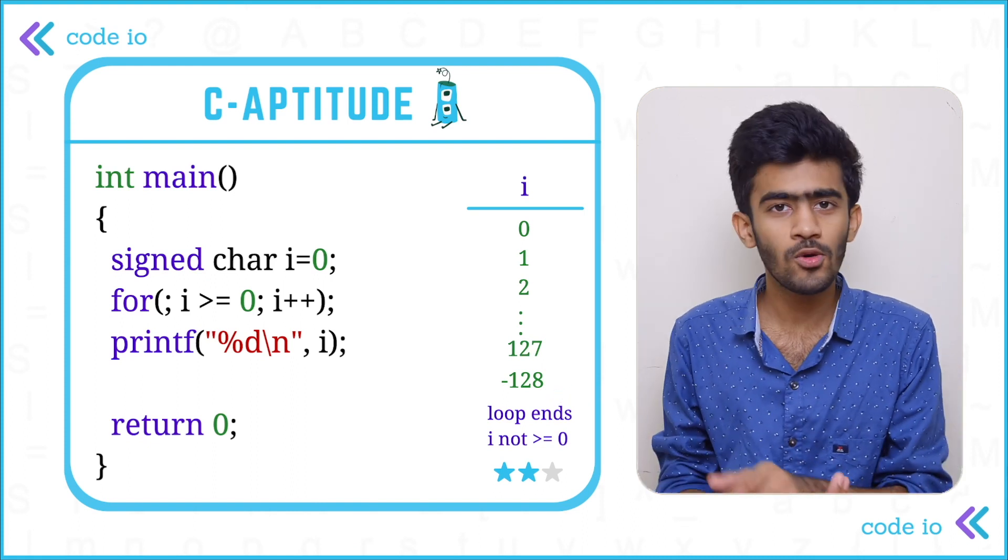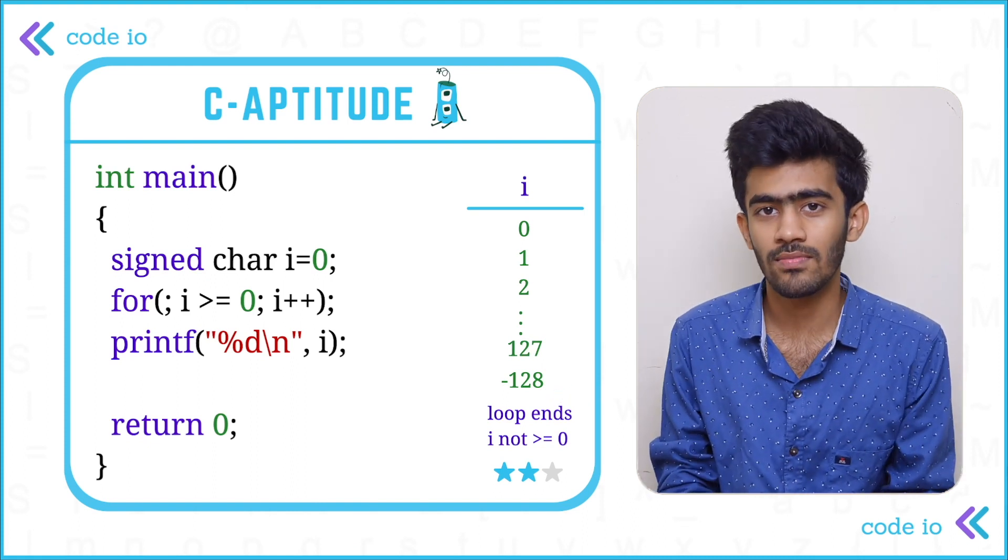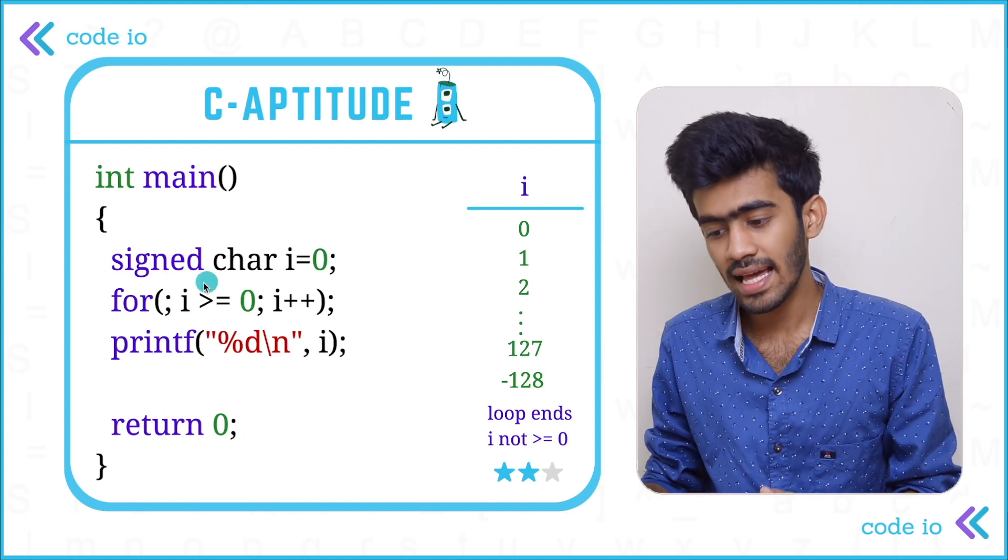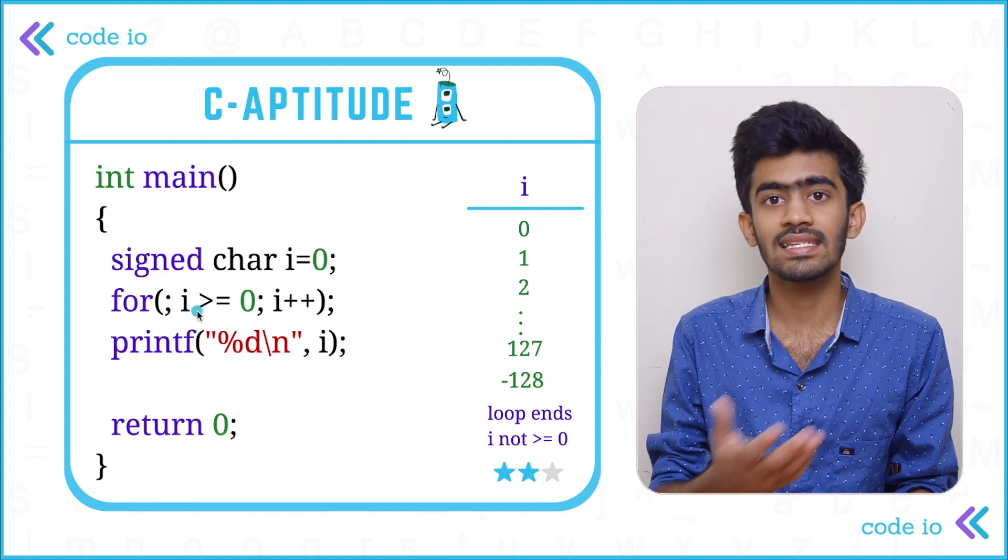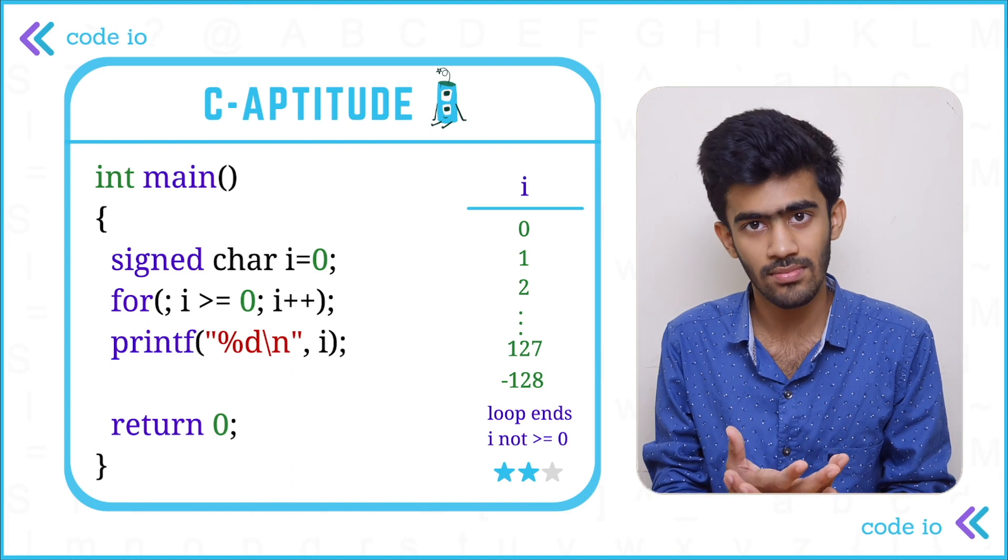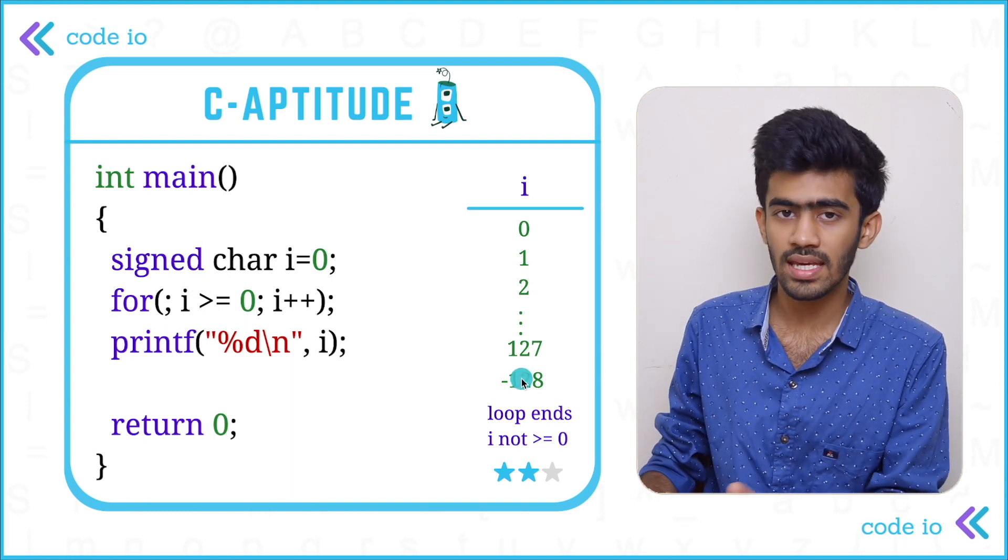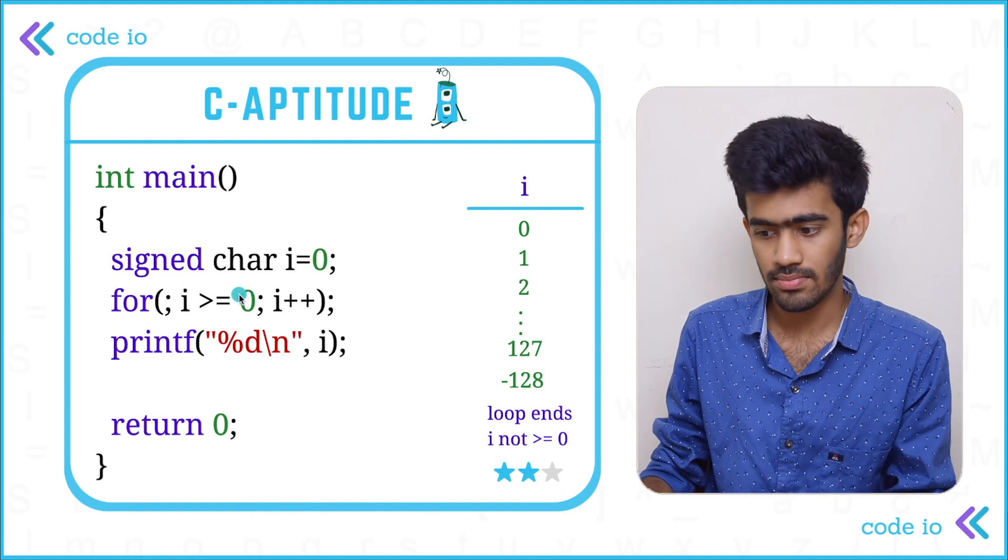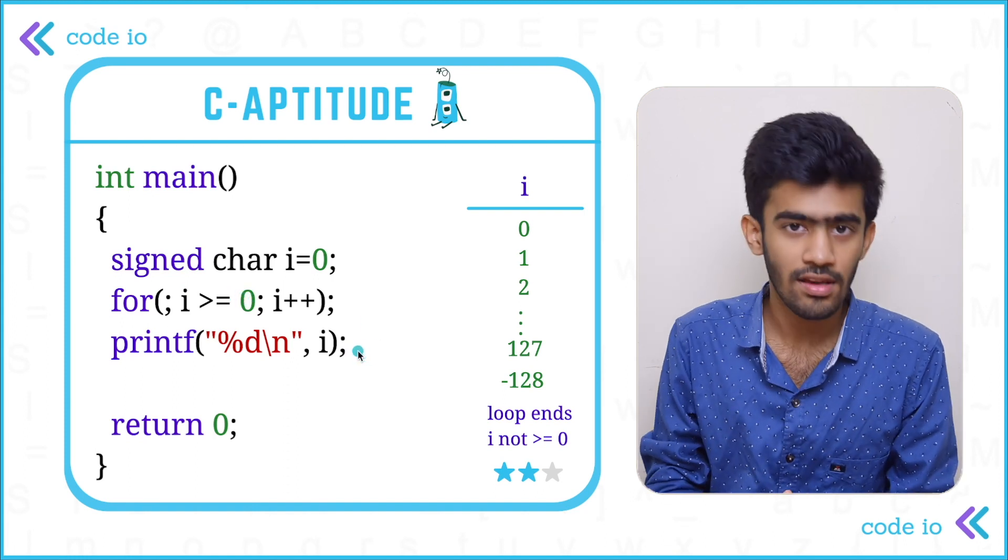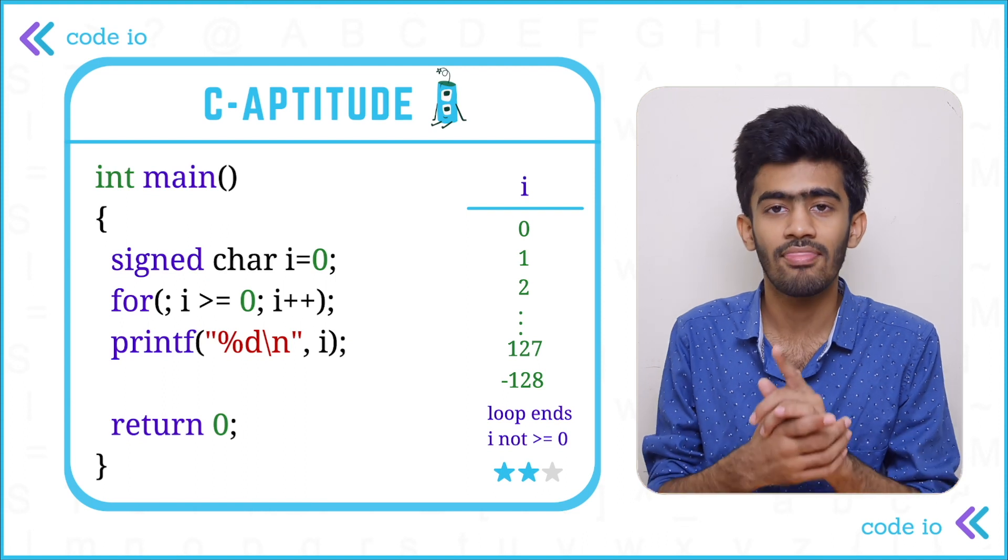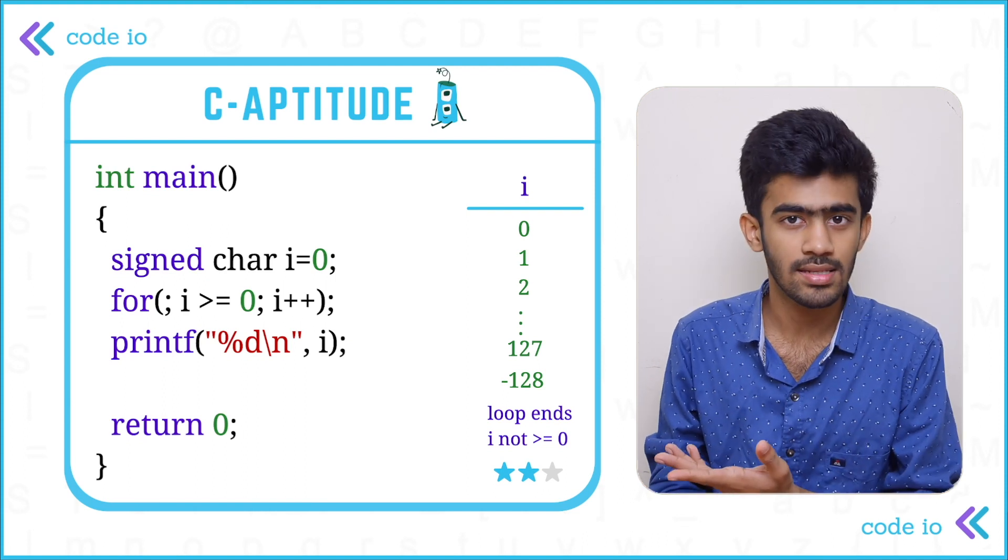And now the loop ends because the condition is false now. Minus 128 is not greater than or equal to 0, it is less than 0 because it is a negative number. And hence in that situation, minus 128, the loop would end. And we would have to print the value of i which is minus 128. And that is the answer to this question.